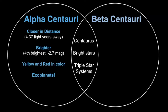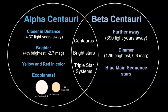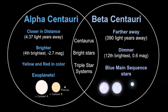Alpha Centauri has confirmed exoplanets. Alpha Centauri A is the biggest, B is next, and Proxima is a red dwarf star — very small in comparison to our own Sun. Beta Centauri is much further away at 390 light years, slightly dimmer with a magnitude of 0.6, and is the 12th brightest star in the sky. The Beta Centauri system is all blue main sequence stars of different sizes. Keep in mind the Beta Centauri stars are much, much bigger in actual size compared to the Alpha Centauri system.